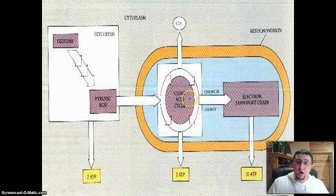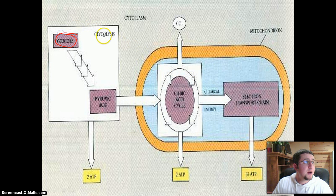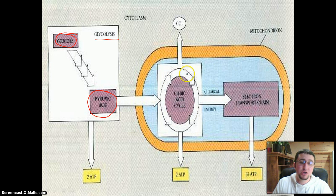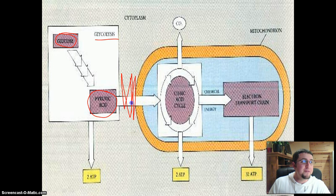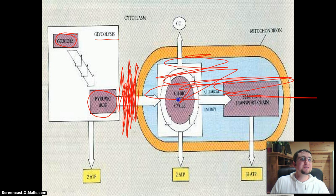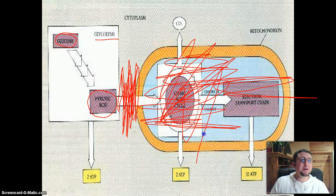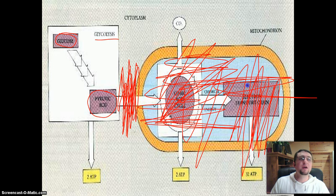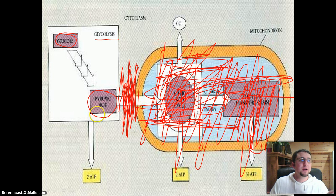Here I have a diagram of cellular respiration. We take glucose, which is broken down in glycolysis into pyruvic acid. If oxygen is present, we go to the citric acid cycle and eventually to the electron transport chain. But in fermentation, we have no oxygen present, so we don't go there — all of that does not occur. We won't get the Krebs cycle or the electron transport chain; we stop right after glycolysis.